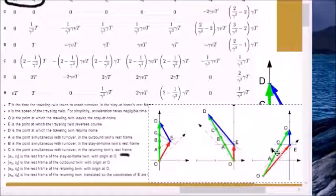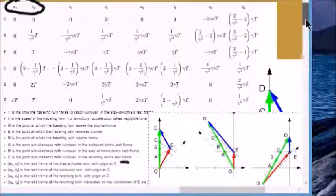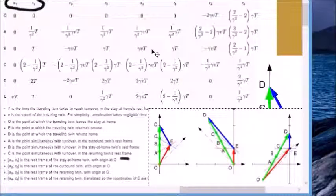Now let's ask this question: why generally did these four sets of coordinates generate only three diagrams? W Woods explains here that he has two rest frames of the traveling twin, one with an origin at O and the other translated so that the coordinates of E are the same as in frame number two.